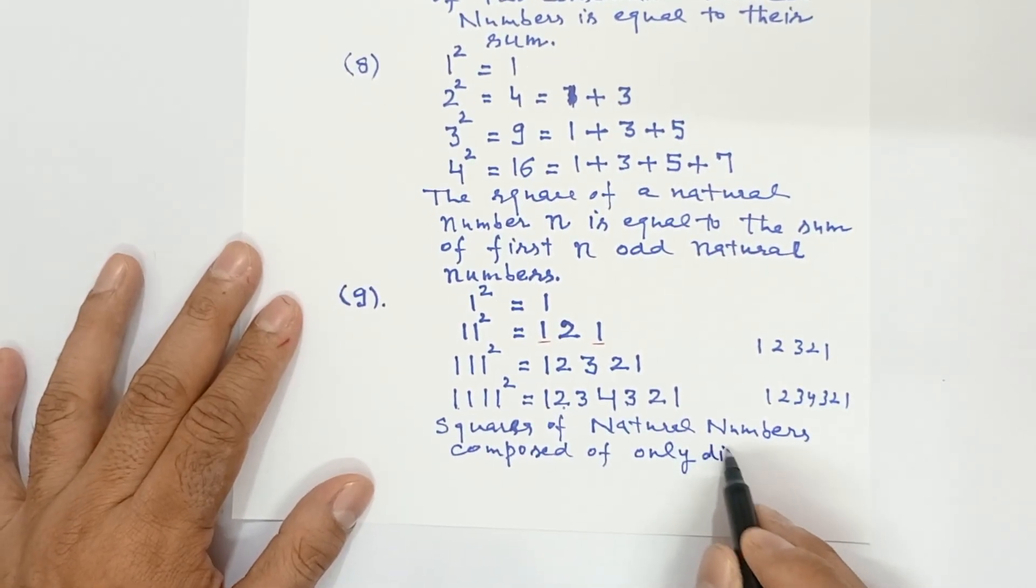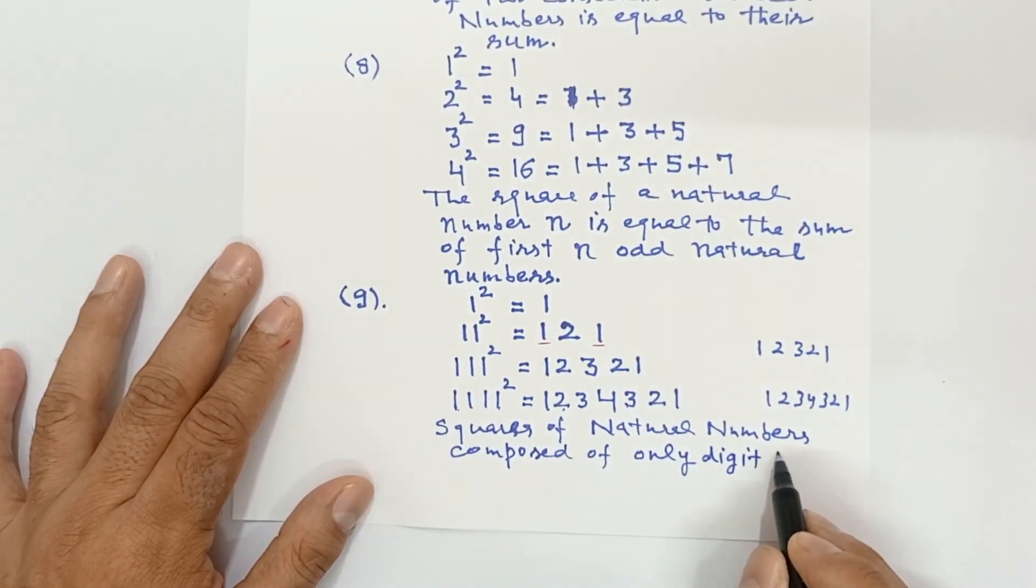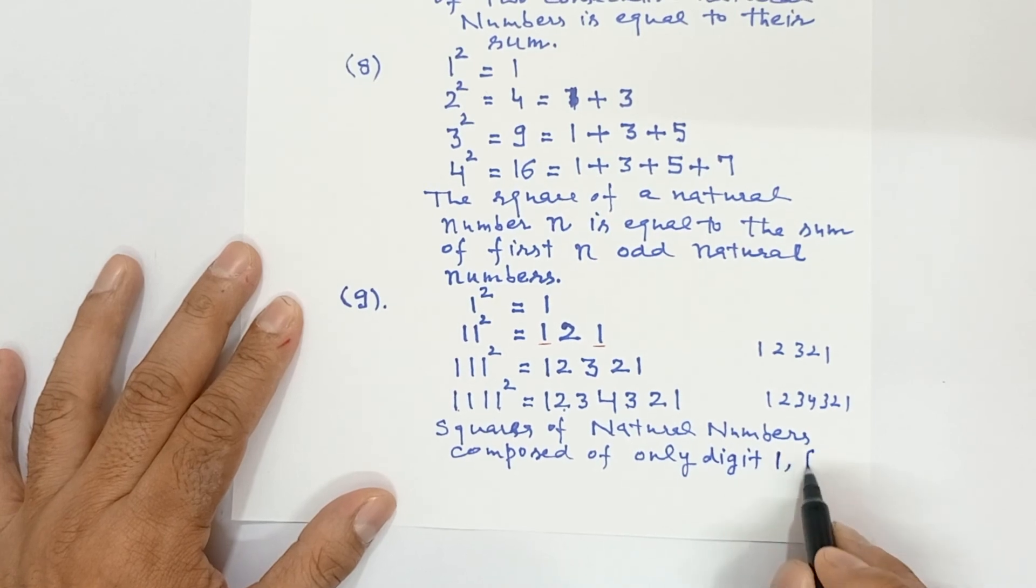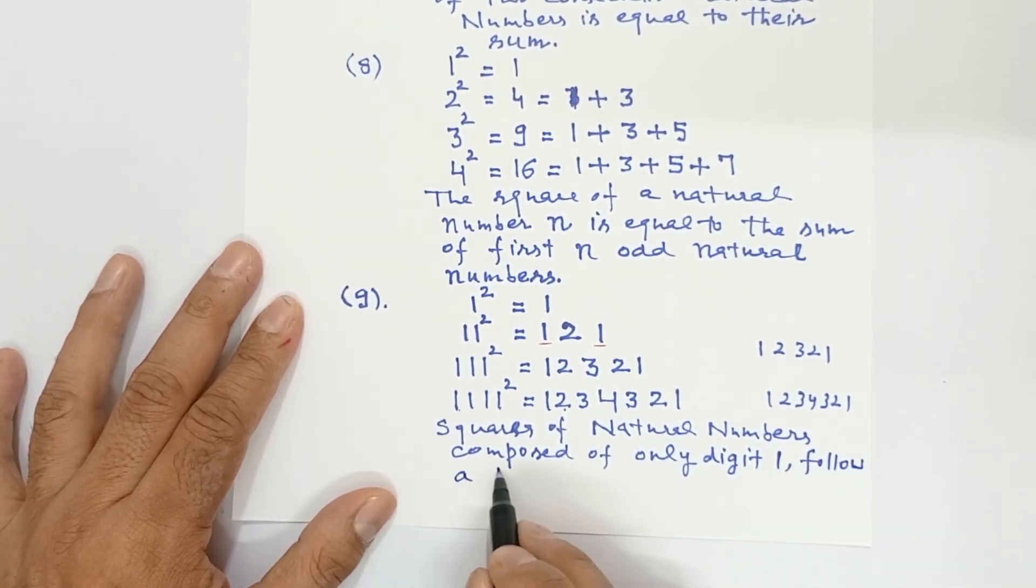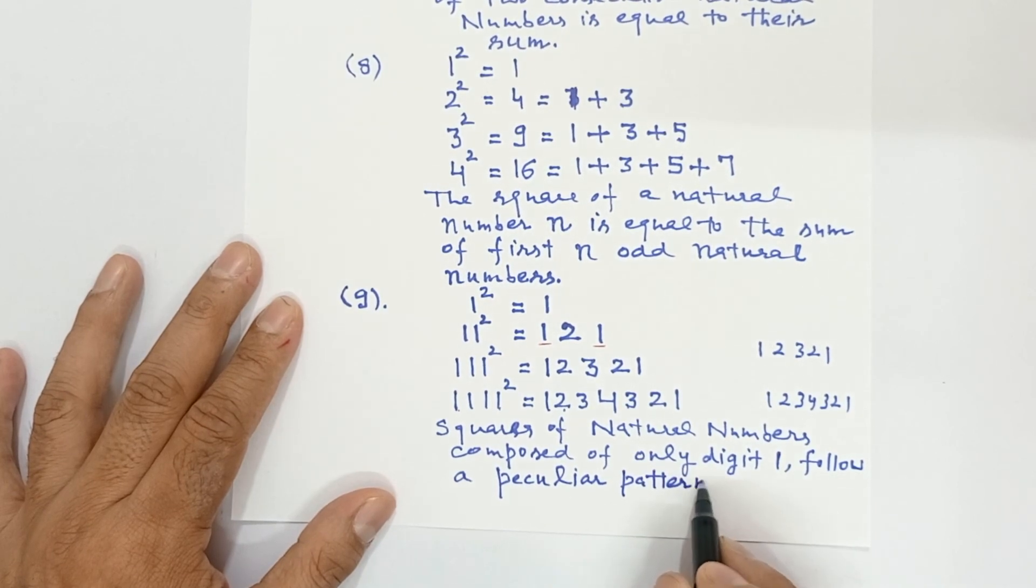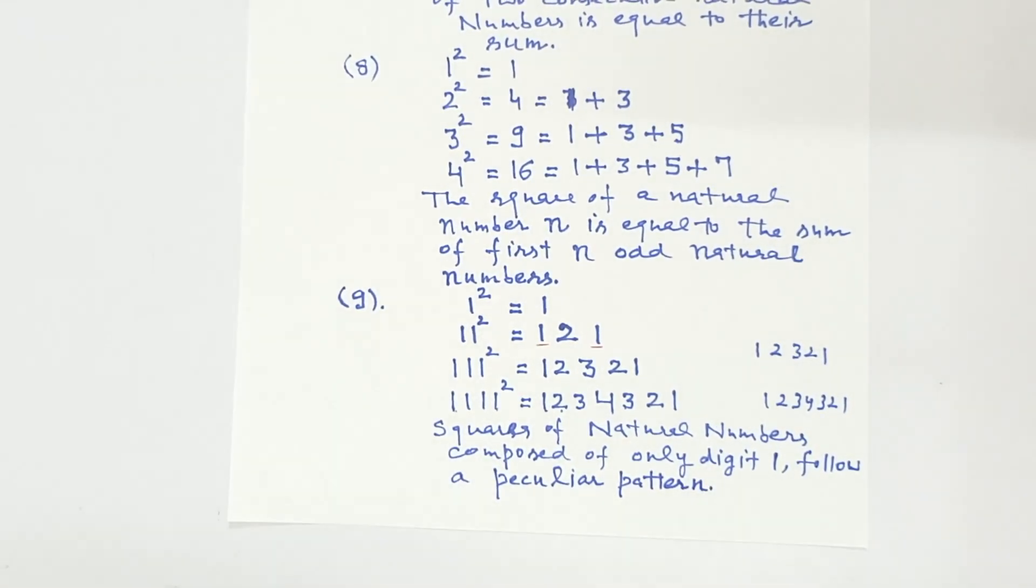So you can write squares of natural numbers composed of only digit 1, only digit 1, follow a peculiar means strange pattern, peculiar pattern. So these were facts about perfect squares.